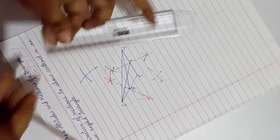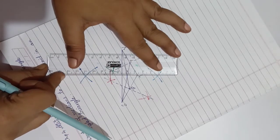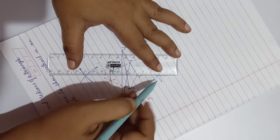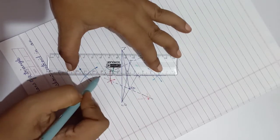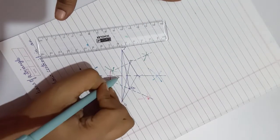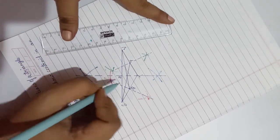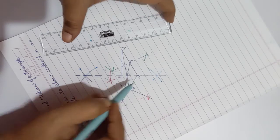Join the two intersecting arcs with dotted lines. The point obtained is point R, the midpoint of SV. Join the midpoint R with the opposite vertex T.